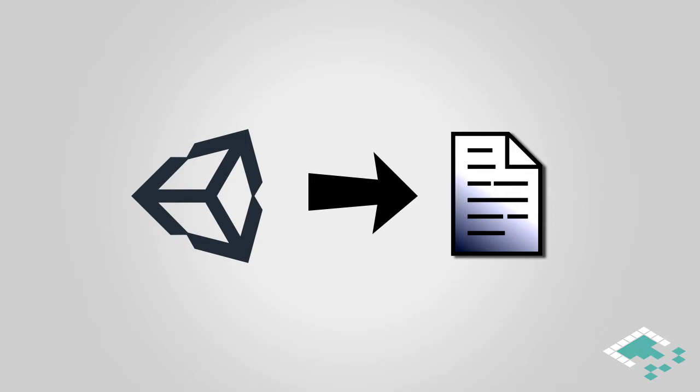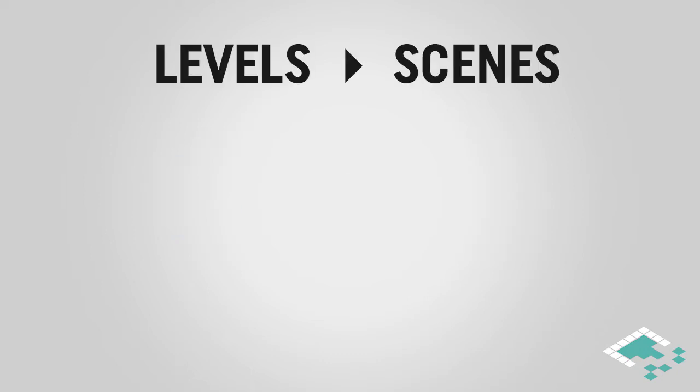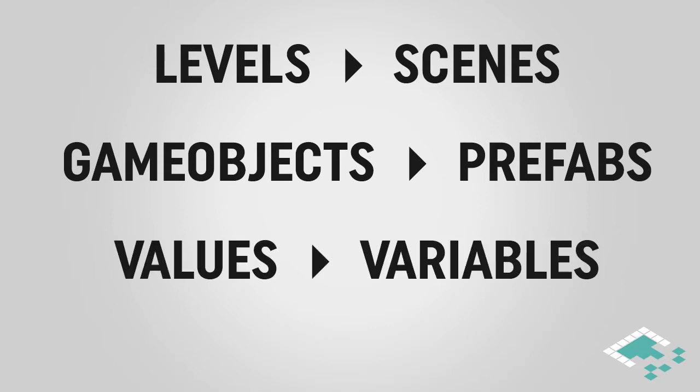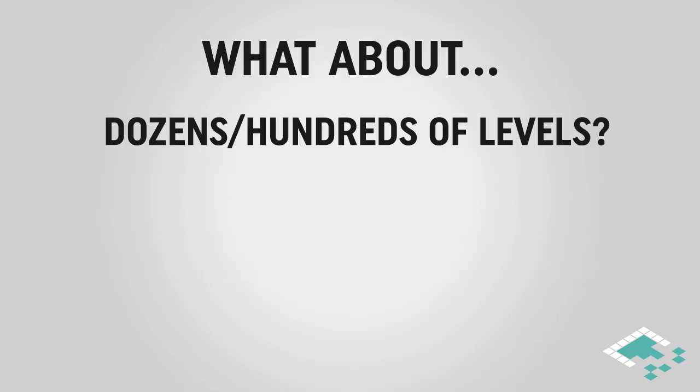When you first start using Unity, chances are you're saving your levels as scenes, storing game objects as prefabs, and saving initial values into your variables in your classes. However, what happens when you get to dozens or hundreds of levels in your game and you don't want to be saving them all as individual scenes?